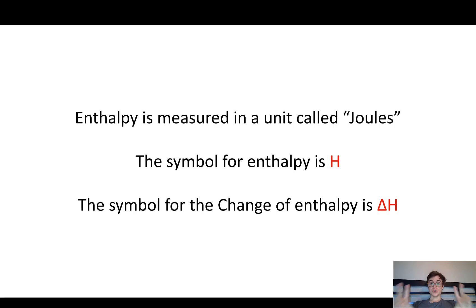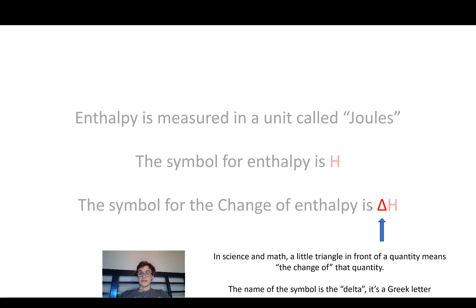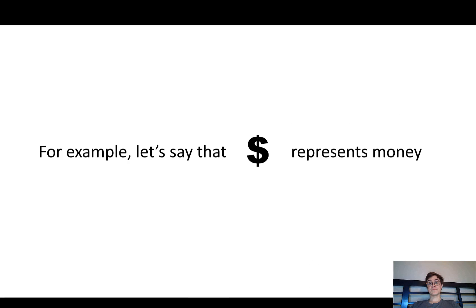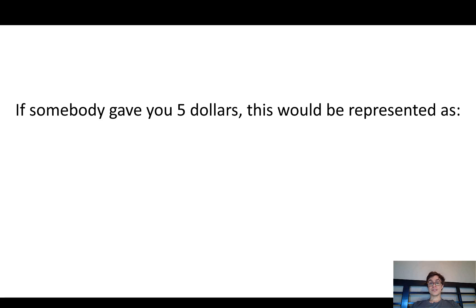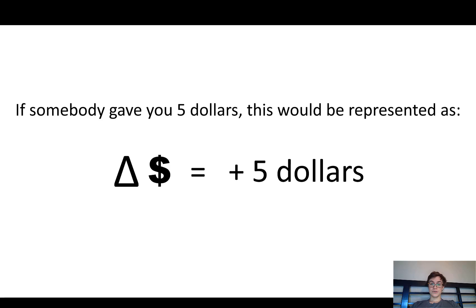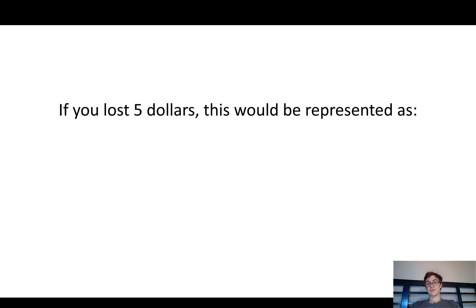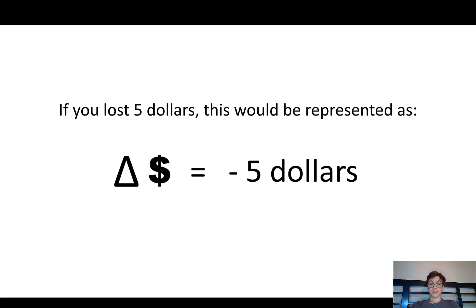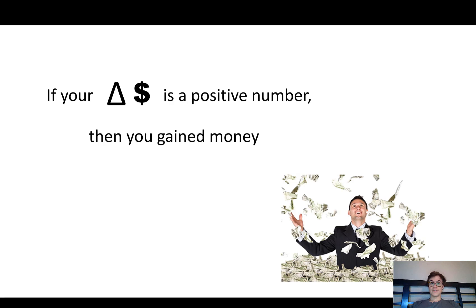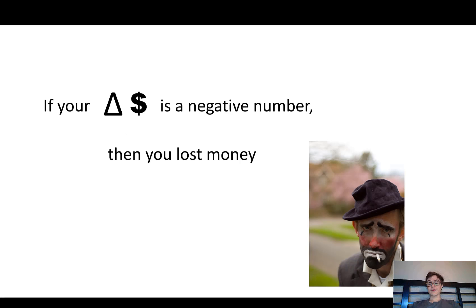Enthalpy is measured in joules, and the symbol for enthalpy is H. We also have a symbol for the change in enthalpy, which is delta H — a little triangle in front of H. In science and math, a triangle in front of a quantity means the change of that quantity; the triangle is called delta and it's a Greek letter. For example, if the dollar sign represents money and somebody gave you five dollars, we'd represent this as delta money equals positive five dollars. But if you lost five dollars, delta money would be negative five dollars.